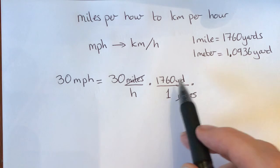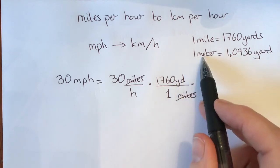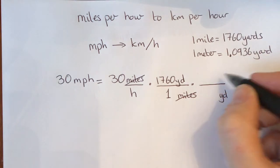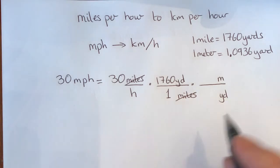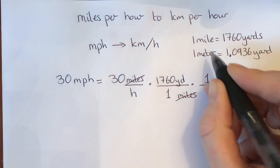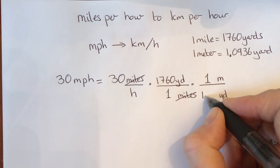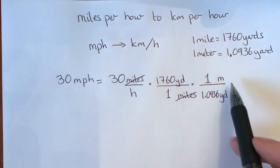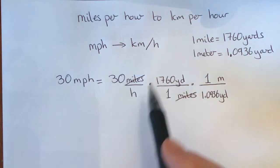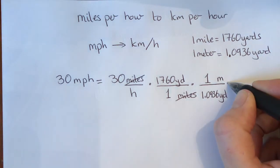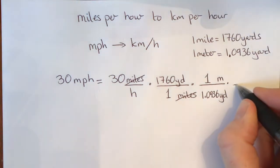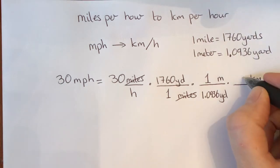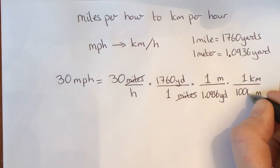Let's first change it to meters. We have yards here and we'd like to convert to meters. If we're going to change to meters, we have to divide by yards and at the same time multiply by meters. We know that one meter is the same as 1.0936 yards. Now we've got how many meters per hour, but we want kilometers per hour. So the final thing we have to do is divide by meters and multiply by kilometers. We know that one kilometer is the same as 1000 meters.